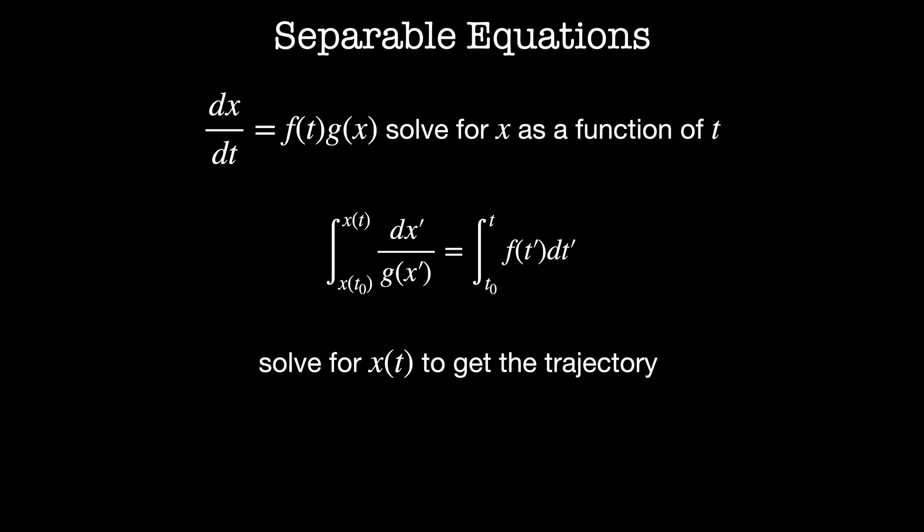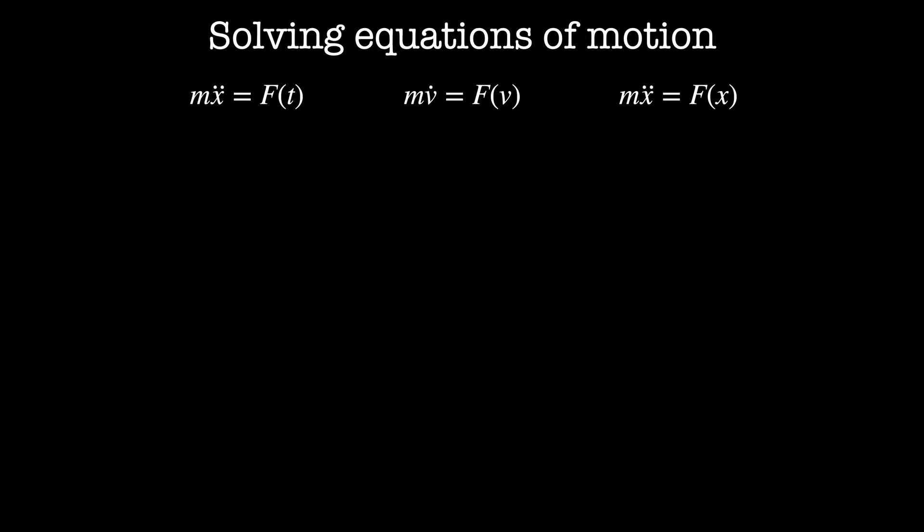For a dynamics problem, this would give us the trajectory of our particle. This form of the integrals implements the initial conditions for the equation. On the right-hand side, we're starting at t₀ and integrating to time t, and on the left-hand side, this corresponds to starting at the initial position x(t₀) = x₀. We'll put this into practice now when we look at some of the forms of the equations of motions we'll encounter when we solve Newtonian mechanics problems.